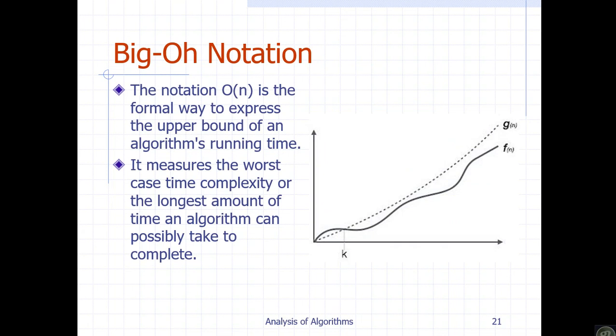In Big O notation, the algorithm is represented by its upper bound state — the maximum time to determine the algorithm. In this graph, the algorithm is a function representing the maximum time.